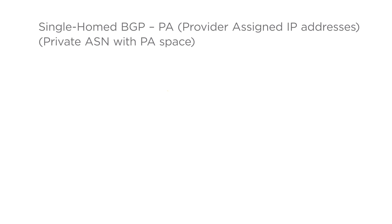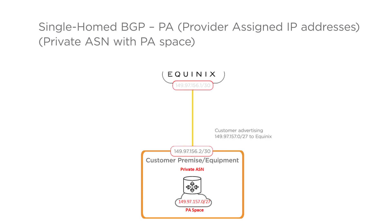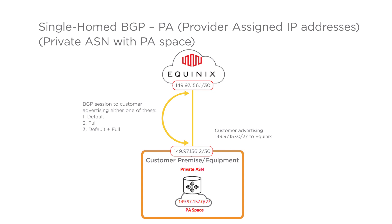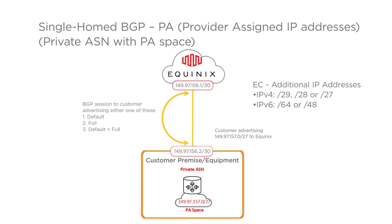Single-home BGP PA, or provider-assigned IP addresses with private ASN and PA space. The customer needs the assignment from Equinix for both private ASN and PA space. Equinix provides an IPv4 slash 30 or IPv6 slash 126 for configuration. BGP policy is used to select default routes, full routes, or default plus full routes. Getting additional IP addresses from Equinix becomes mandatory using the POF EC additional IP addresses. IPv4 choices are slash 29, slash 28, or slash 27. IPv6 choices are slash 64 or slash 48.